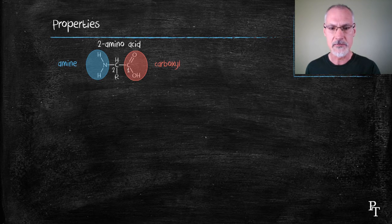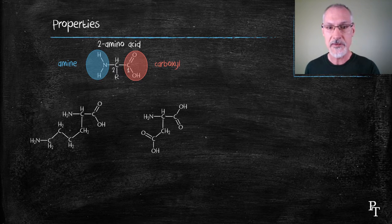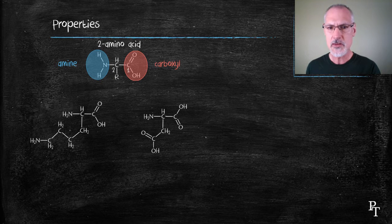That R group can take on a variety of structures. Up to 500 amino acids have been identified, but only 20 of them are essentially used to manufacture proteins.